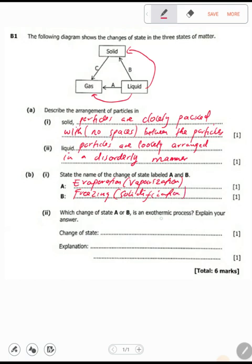Which change of state, A or B, is exothermic? A process is exothermic if it releases heat to the surrounding. When a liquid changes to gas, it gains heat so that the bonds are broken. But when a liquid changes to solid, it loses heat so that the particles can come together.